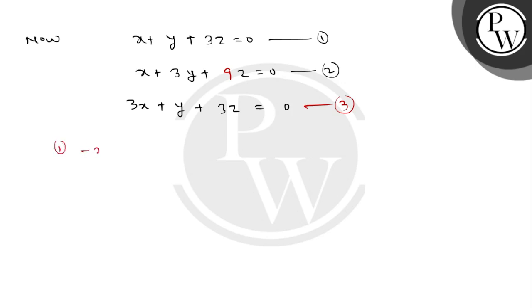Now what do we do? Equation 1 minus equation 2. x cancels. Minus 2y minus 9z minus 3z equal to 0. This implies minus 2y is equal to minus 6z. y upon z value equals minus 3.